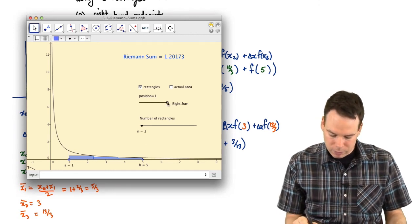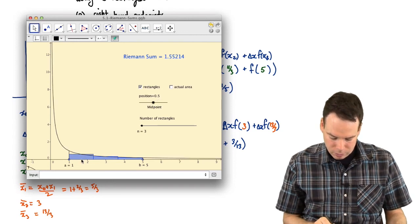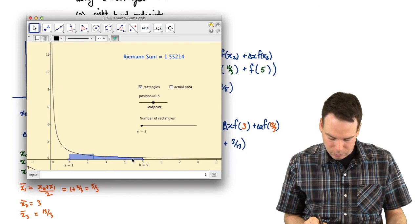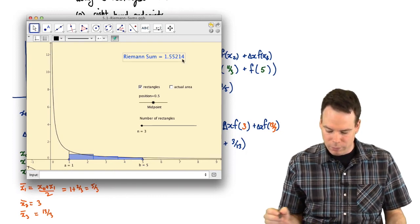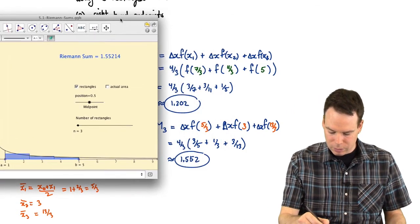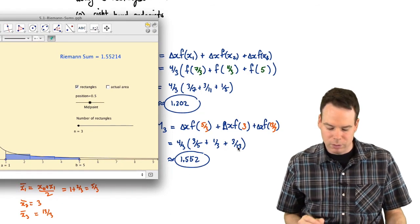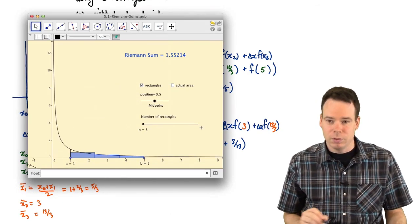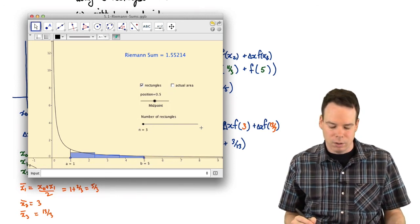How about midpoint? Well, we drag the slider to midpoint. Notice that now it's using the midpoint of each interval to cap off the rectangle. And we see that the value is 1.55214. And if we take a peek back, we see that that agrees to three decimal places with what our sum is. So just a quick way to check our results. We could use the applet that we used for visualization purposes. We can use it to double check our work as well.